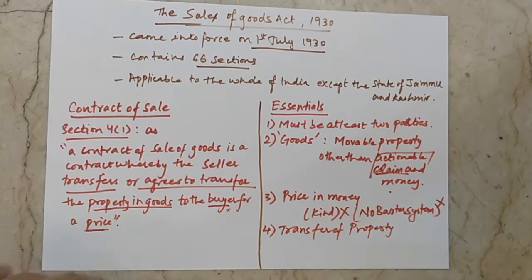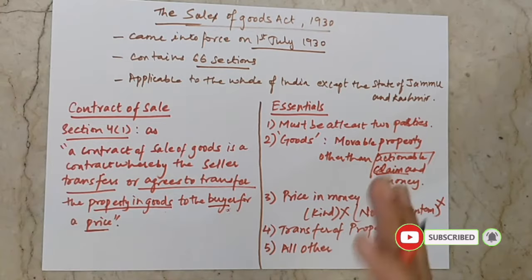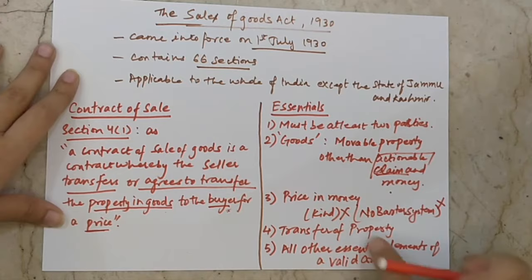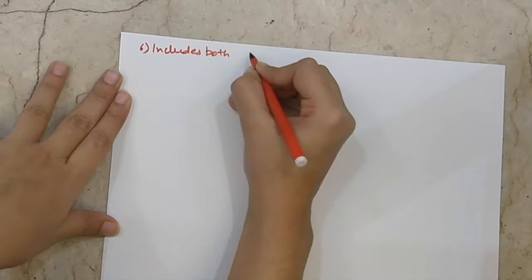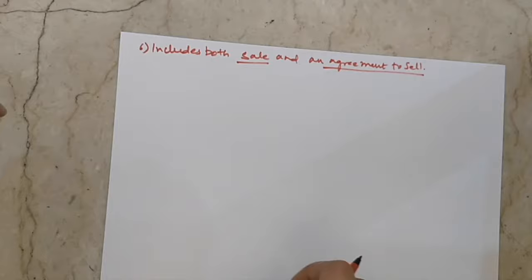The fourth essential is the transfer of property. Transfer of property means that whatever possession, ownership, or risk the seller has is all transferred from seller to buyer. Additionally, all other essential elements of a valid contract must also be present.